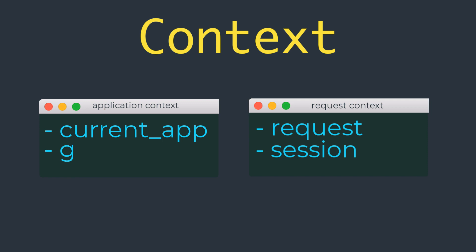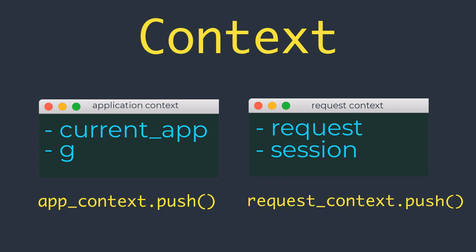Flask activates the application and request context before dispatching a request to the application and removes them after the request is handled. When the application context is pushed, current_app and g become available to the thread. Likewise, when the request context is pushed, request and session become available as well. If any of these variables are accessed without an active application or request context, an error is generated.